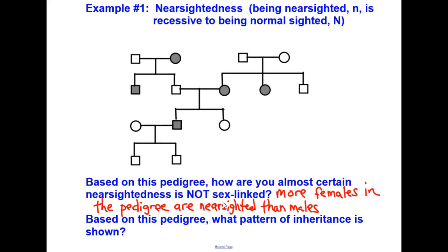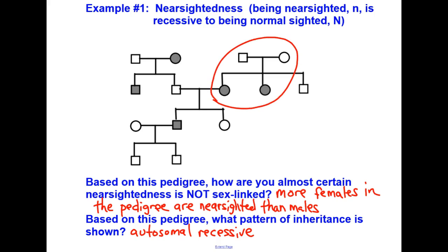Next question: based on this pedigree, what pattern of inheritance is shown? If you said autosomal recessive, you were correct. What is the indication in the pedigree that this is true? If we look at this circled area and our description of autosomal recessive, we see two parents without the trait who had at least one child with the trait. In our example, this dad and this mom were both normal sighted yet had two children that possessed the trait. This is a dead giveaway that this is an autosomal recessive inheritance pattern.